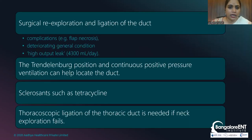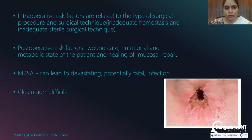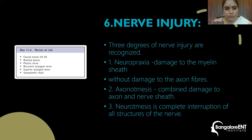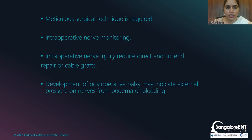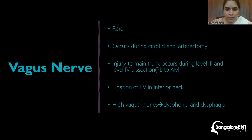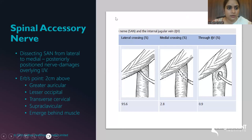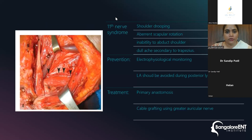Other complications include infections with MRSA and Clostridium difficile. Nerve injuries involve various cranial nerves, the brachial plexus, and the phrenic nerve. The vagus nerve is at risk near ligation sites. The spinal accessory nerve is at risk at the medial and lateral crossing points — the most common sites of injury — resulting in shoulder drooping and aberrant shoulder rotation. Prevention is via electrophysiological monitoring, and treatment begins with primary repair.